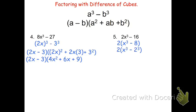So working this one out, I'll get 2(x - 2)(x² + 2x + 2²). Now simplifying it one more time, I'll get 2(x - 2)(x² + 2x + 4).